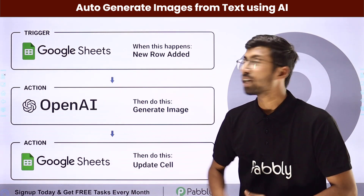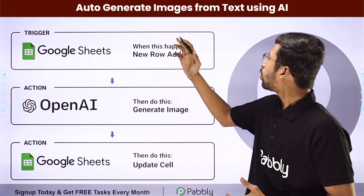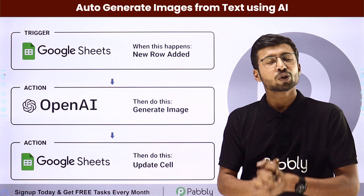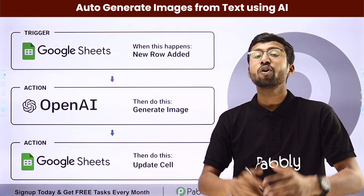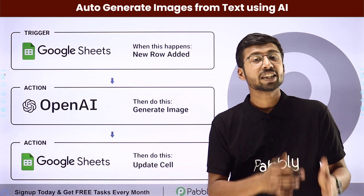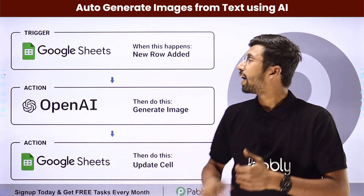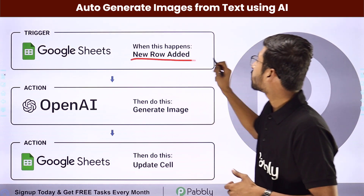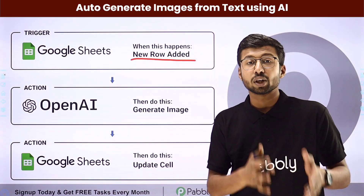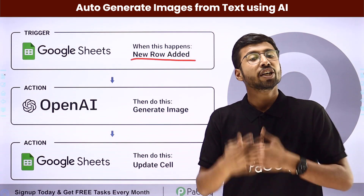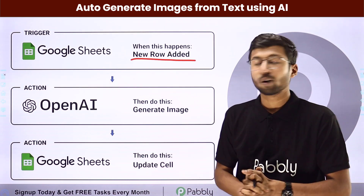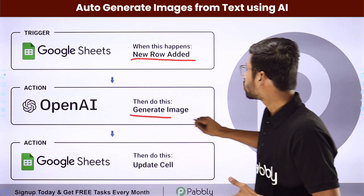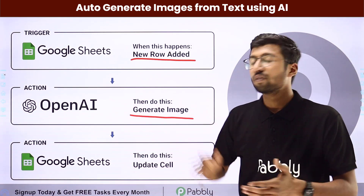In this video, we are going to learn how to auto-generate images from text using AI. This is an amazing automation, and in this automation, we are just going to enter some text as a new row in our Google Sheet. On that basis, using an artificial intelligence platform like OpenAI, we are going to generate some images.